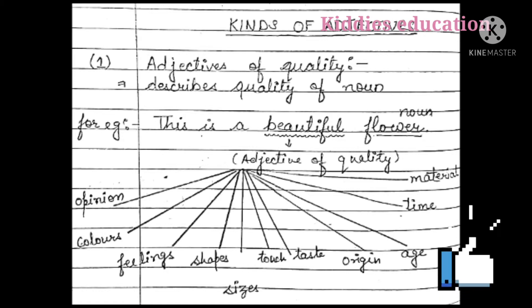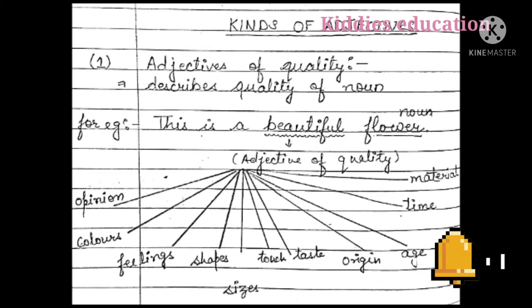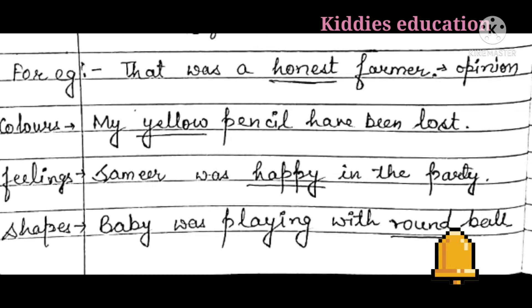We have many types of adjectives of quality — opinion, colors, feelings, shapes, touch, taste, origin, age, time, material, etc. For example: 'That was an honest farmer.' Here, farmer is a noun and honest gives an opinion about the farmer, so honest is an adjective of quality. 'My yellow pencil has been lost' — yellow is the color of the pencil, so yellow is also an adjective of quality.